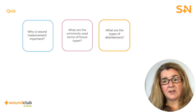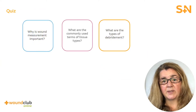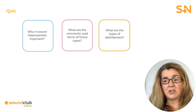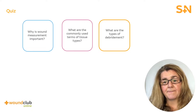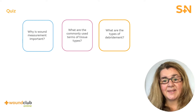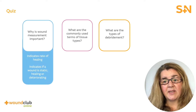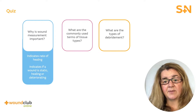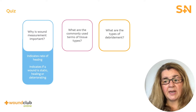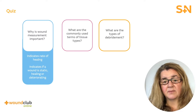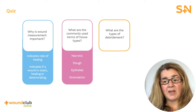To check your knowledge and understanding, try to answer the quiz questions. Why is wound measurement important? It indicates the rate of healing and indicates if a wound is static, healing, or deteriorating. What are the commonly used terms for tissue types? Necrotic, slough, epithelial, and granulating.